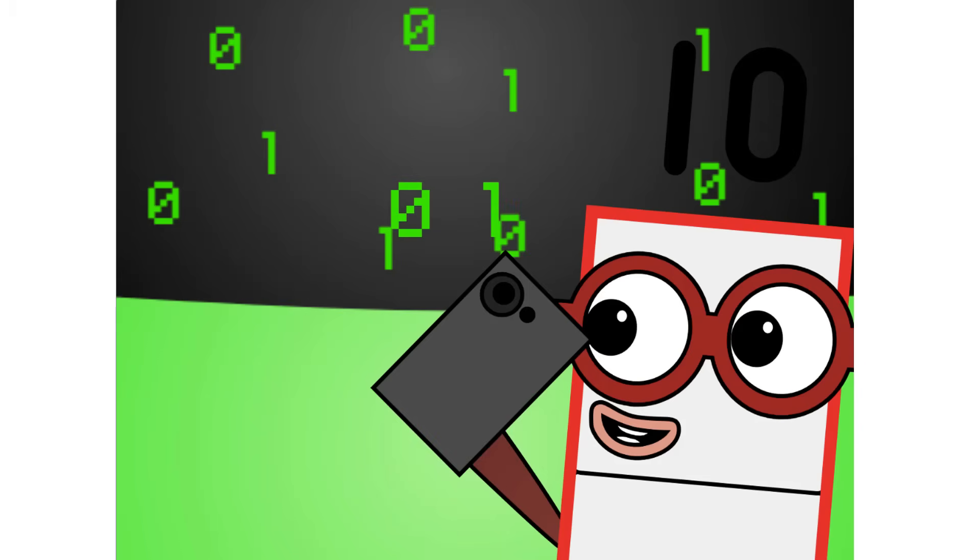So, there are only two digits in binary: zero and one. See? Two digits, two thumbs.